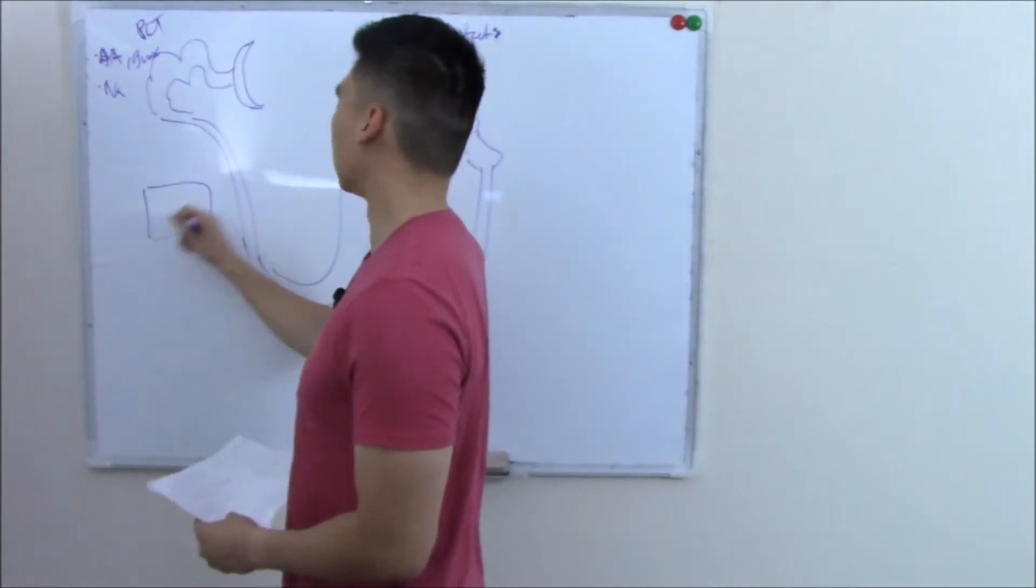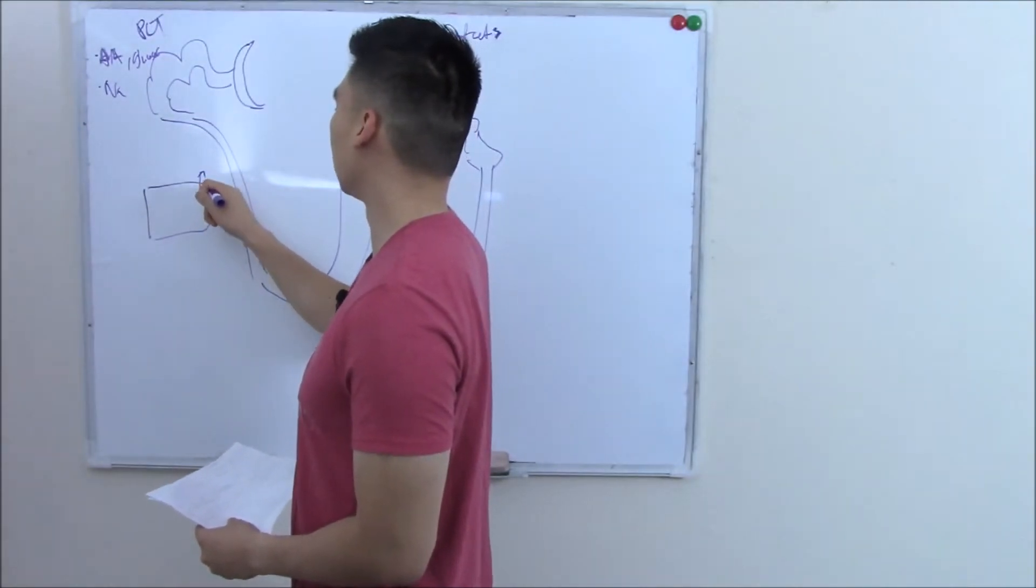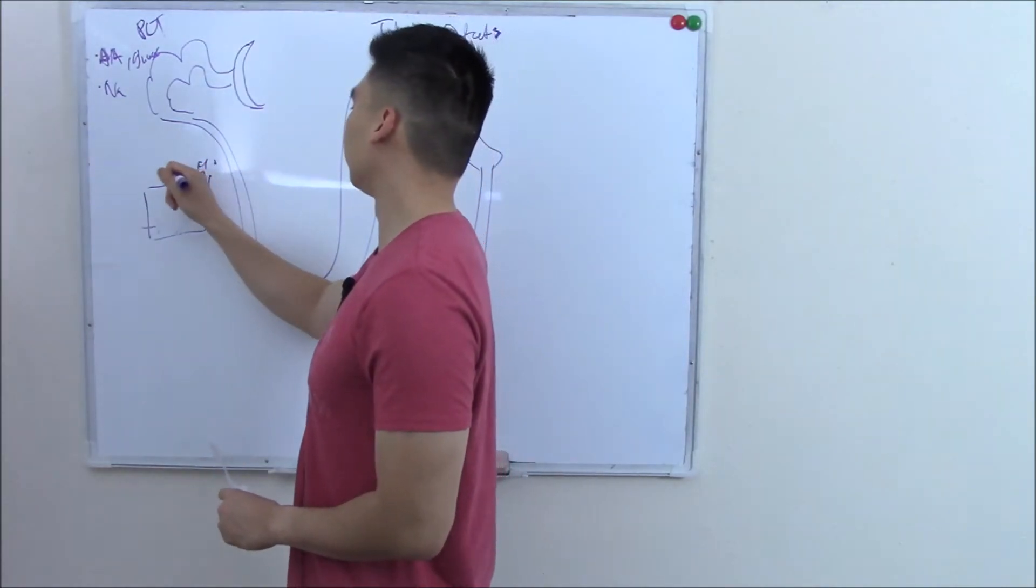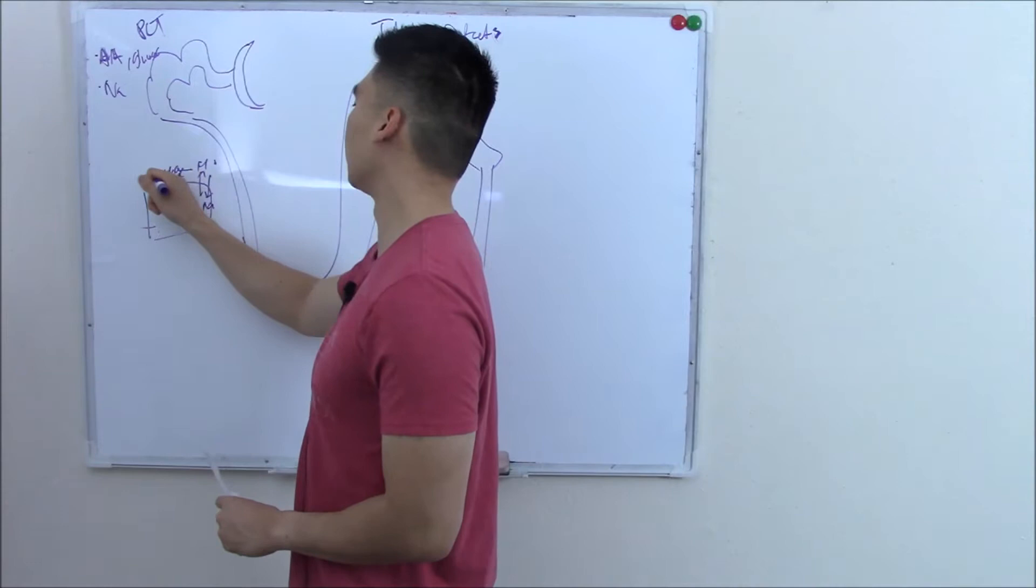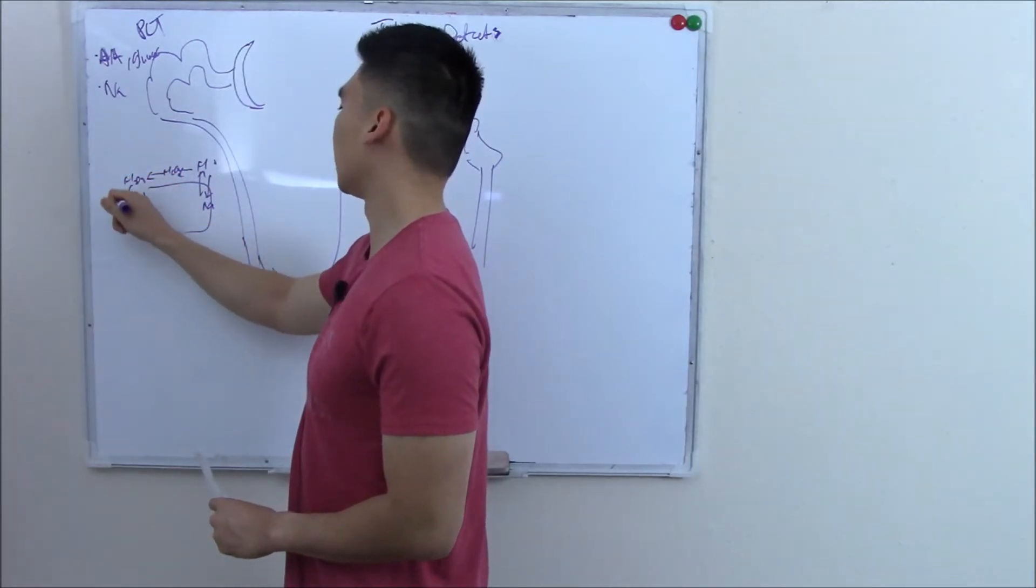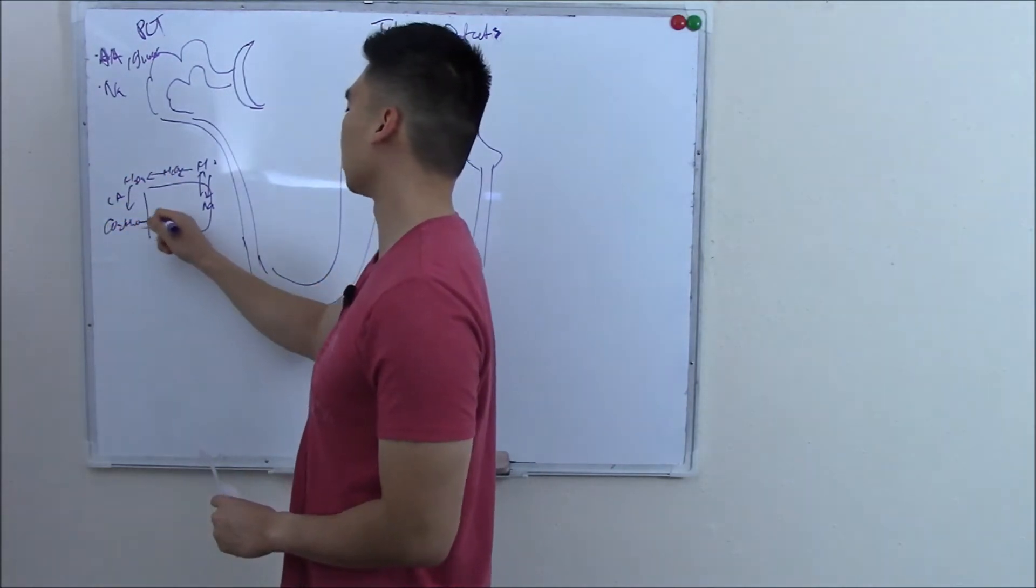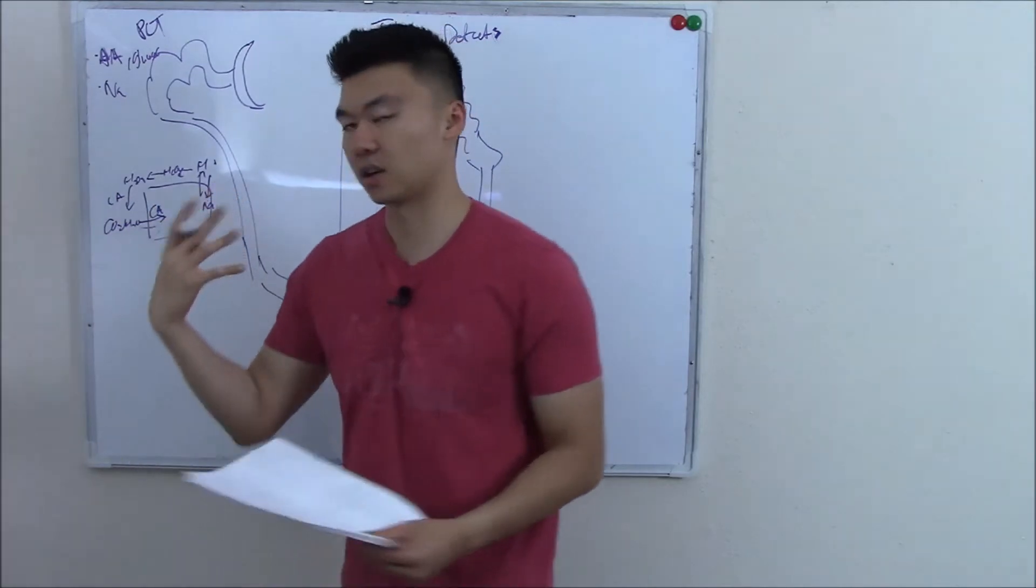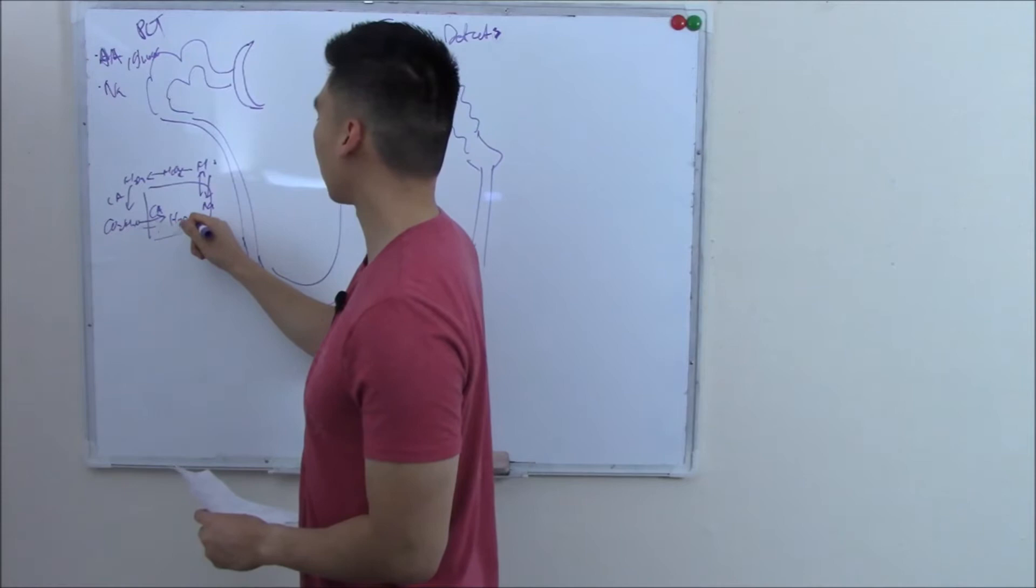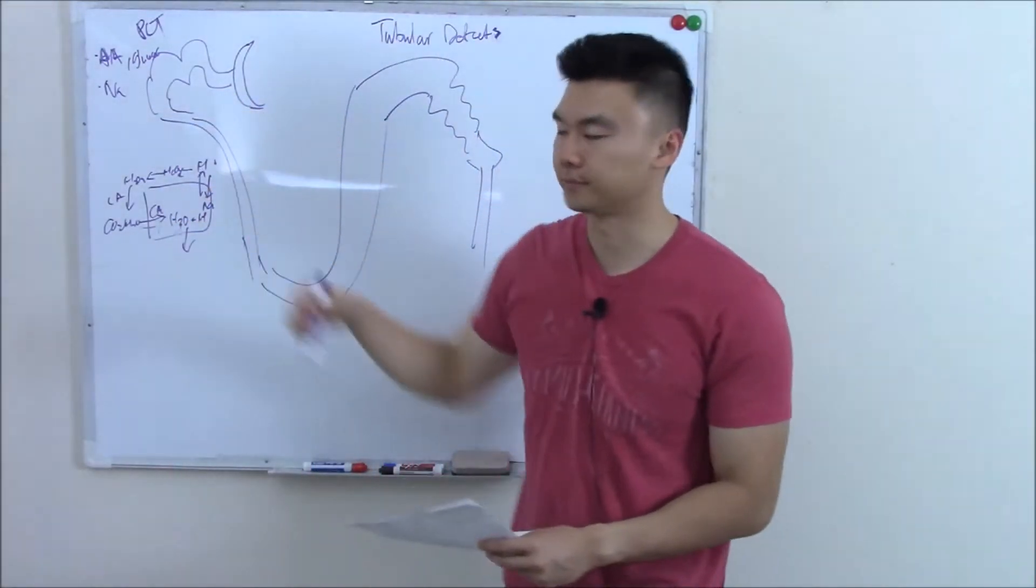It has that sodium-hydrogen pump. So it takes in sodium, pumps out hydrogen, and that hydrogen combines with bicarb to make carbonic acid. Via the enzyme carbonic anhydrase, it becomes CO2 and water that goes into the cell, and then again via carbonic anhydrase does the reverse, makes back bicarb and hydrogen. We reabsorb bicarb and hydrogen is recycled again and again.